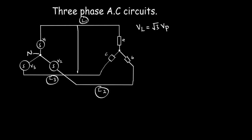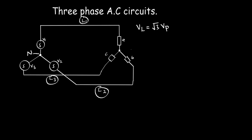I can measure the voltage between L1 and L3 — that is termed as a line voltage. Similarly, I can also measure between L1 and L2, or L2 and L3. They are all termed as line voltages. So the line voltage is equal to the square root of 3 multiplied by the phase voltage.